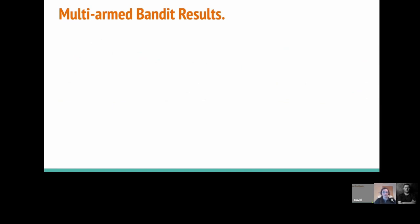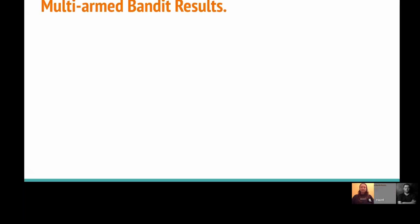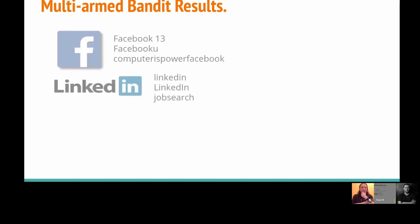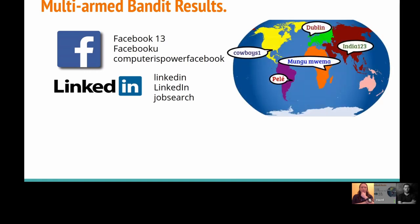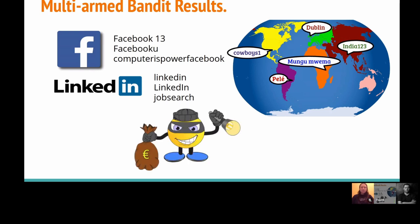So let me hand over now to Hazel, who's going to explain the results we've got using this method. I'm going to talk about the results of our multi-armed bandit model. I'm hoping to show that the multi-armed bandit model can do three things: firstly, it can identify which source a set of leaked passwords comes from; secondly, it can identify the nationality of users in the leaked password dataset; and finally, it can improve password guessing.